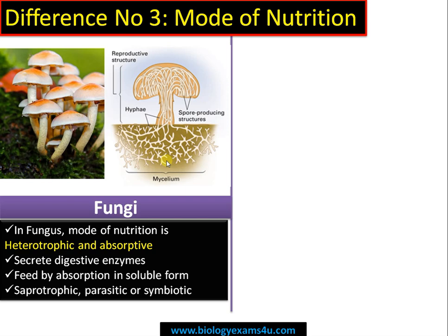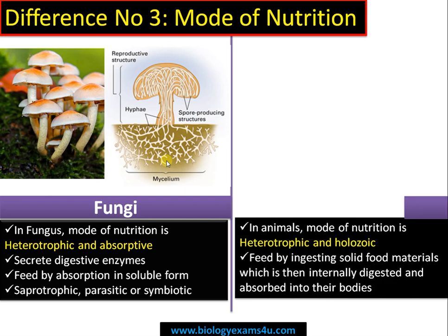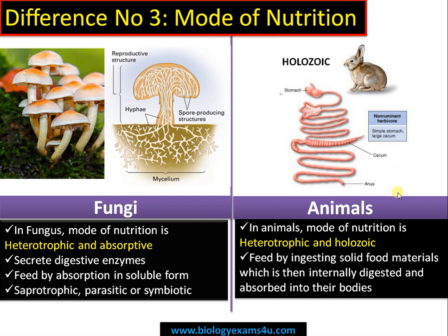Whereas in the case of animals, the mode of nutrition is heterotrophic but holozoic. Animals have a digestive system and can ingest solid food materials internally and digest them through an elaborate, complex system that absorbs the food into their bodies. So the key difference: in fungi, nutrition is heterotrophic and absorptive, whereas in animals it is heterotrophic and holozoic — ingesting solid food materials directly.